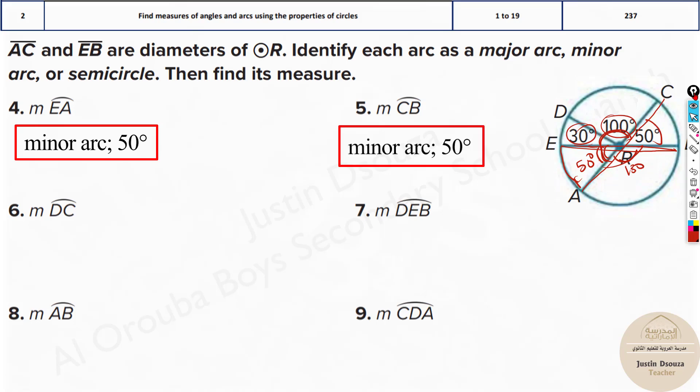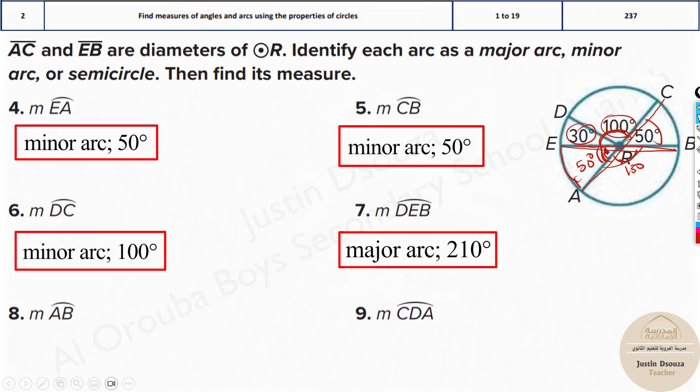What about CB? You can see over here CB is this arc, that is 50 degrees already given over here. DC, where is DC? It's 100, it is minor arc as well. DEB, see DEB, it will be 180 plus 30, it's 210.